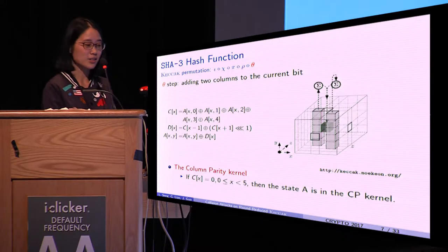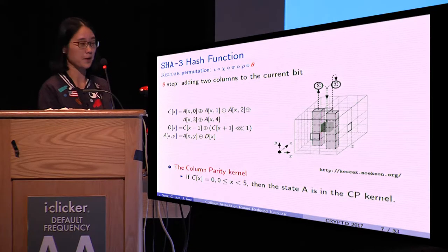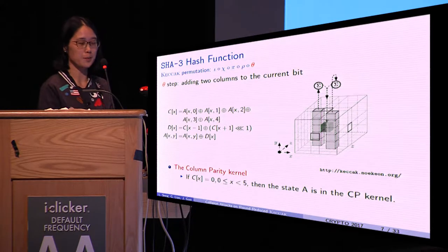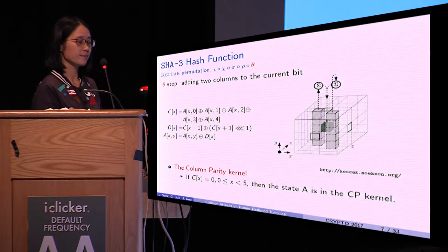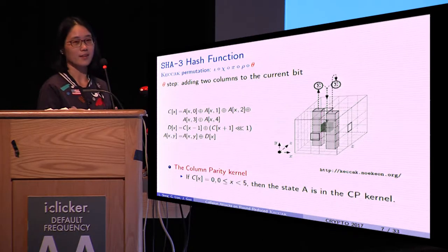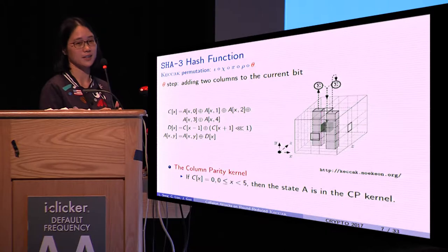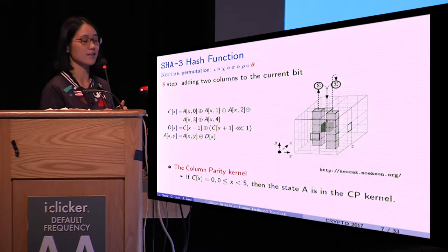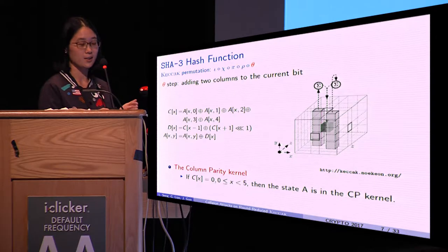Theta adds two columns to the current bit, so each output bit depends on 11 input bits. If each column has even parity, then theta acts as the identity. In this case, we say the state is in the column parity kernel, CP kernel for short.